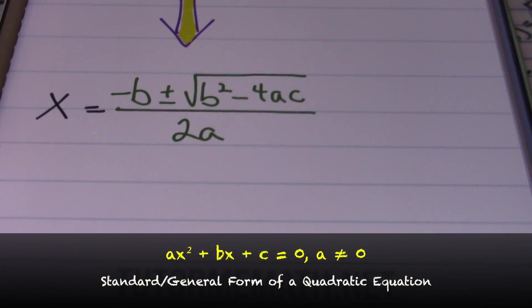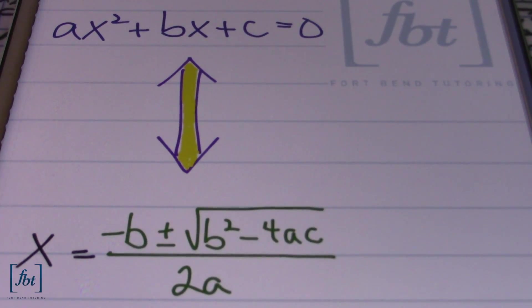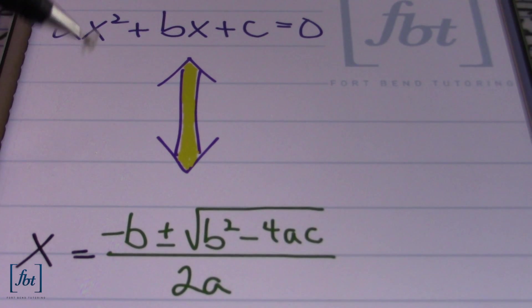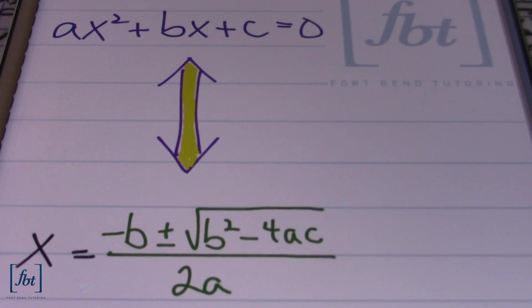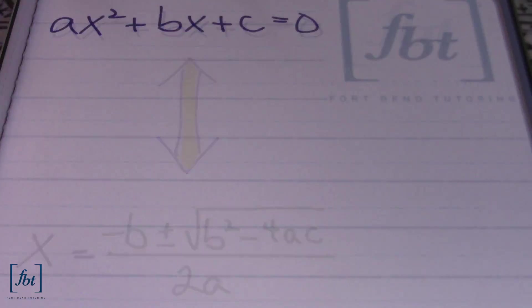In other words, where did this formula come from and how is it related to our previous equation — the lovely ax squared plus bx plus c equals zero? How are these two things related? Well, that's what today's lesson is about: how to take this into that. Okay, so let's get started.